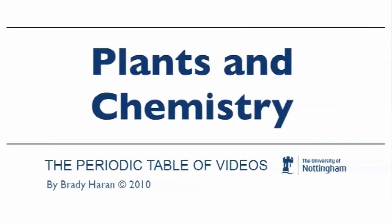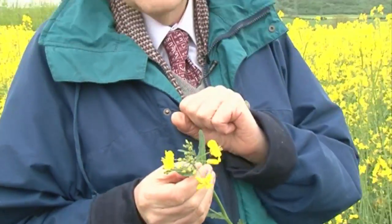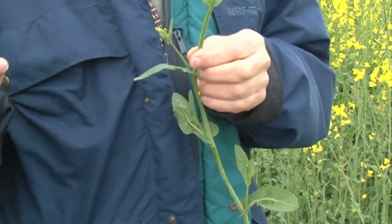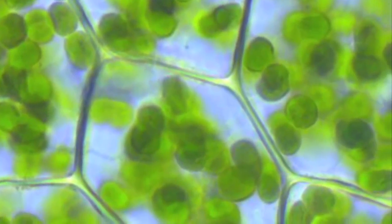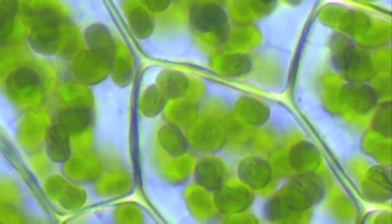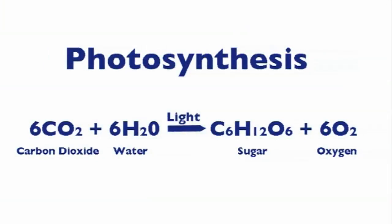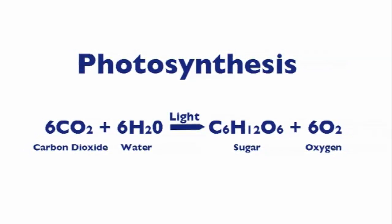So what do I as a chemist see when I look at these flowers and plants? I see they're yellow — I have no idea why they're yellow, but obviously it's quite a complicated organic compound. And I see the leaves, which are green. I know that those are due to chlorophyll, that's a compound of magnesium. Again it's really quite complicated. There's enough chlorophyll in the leaf to capture the energy of the sun and use that to split up water into hydrogen and oxygen, and react the hydrogen with the carbon dioxide in the air to make organic compounds.